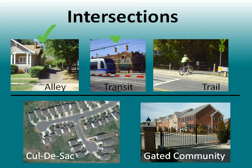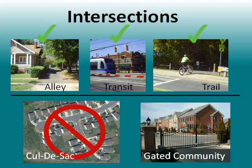In LEED-ND, intersections include streets intersecting other streets, alleys, transit corridors, and non-motorized rights-of-way. It excludes dead-end cul-de-sacs and gated communities. To achieve the higher intersection densities, almost certainly requires some alleys to break up the blocks and perhaps some mid-block trail rights-of-way intersections.